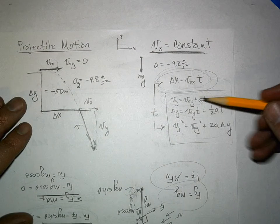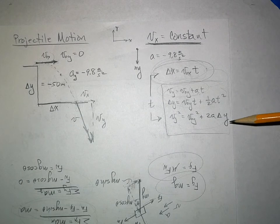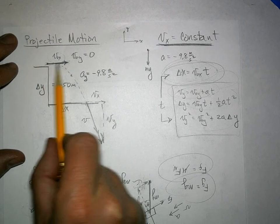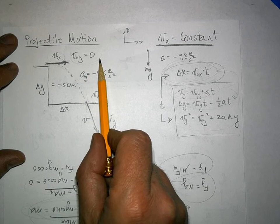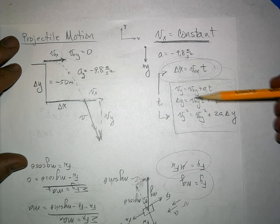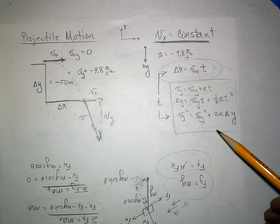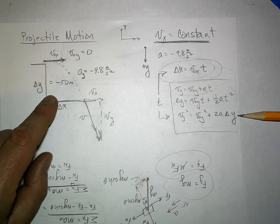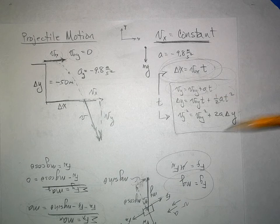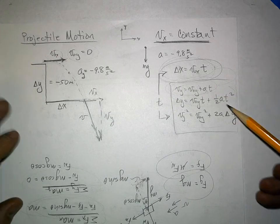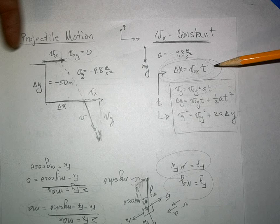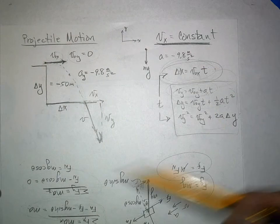In the y direction we use the standard kinematic equations. In a cliff problem, when you throw horizontally, the initial velocity in the y direction is zero, so those terms drop out. You can use delta y equations to solve for time. Time is the link between the x direction and the y direction — solve for time in y, then use it in the x equation.